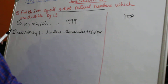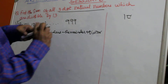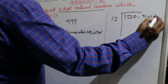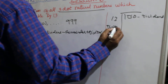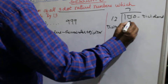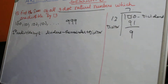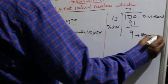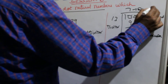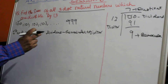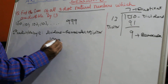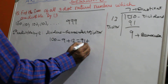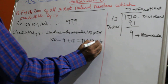You divide 100 by 30. 100 is called the dividend, 30 is called the divisor. It will go 3 times — 3 thirties are 90. The balance is 10, so this is called the remainder, and 3 is called the quotient. So to find the first number: dividend minus remainder plus divisor is 100 minus 10 plus 30, which equals 120.